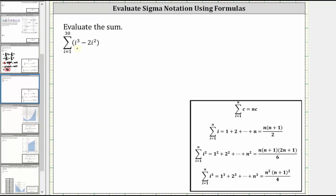Let's begin by writing the given sum as a difference of two sums. The given sum is equal to the sum from i equals one to 30 of i cubed minus the sum from i equals one to 30 of two i squared.